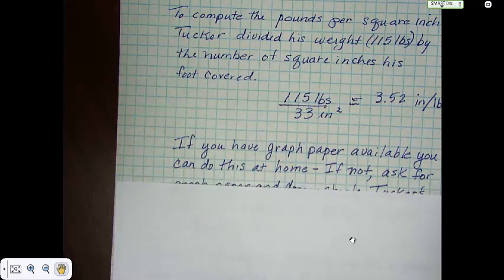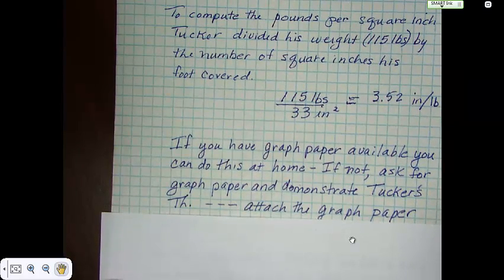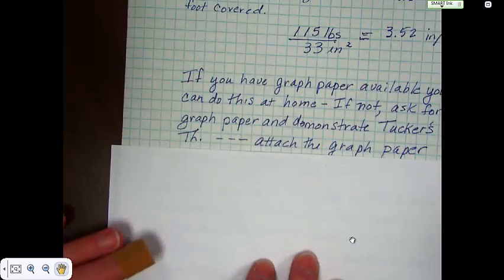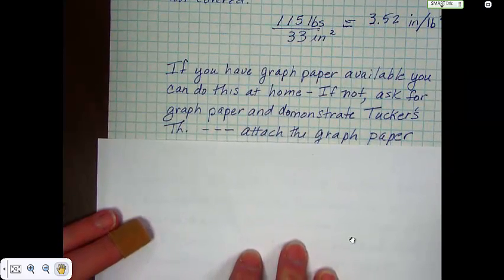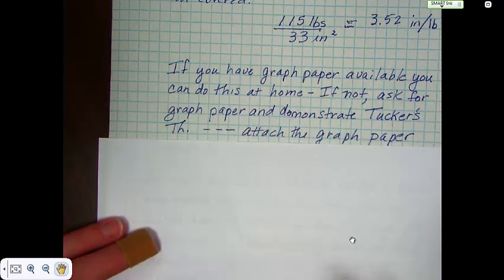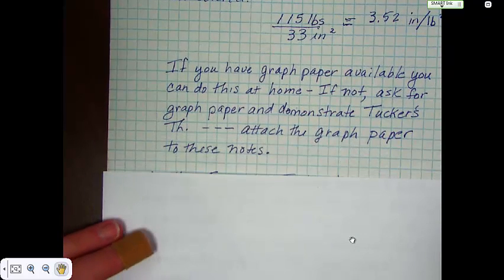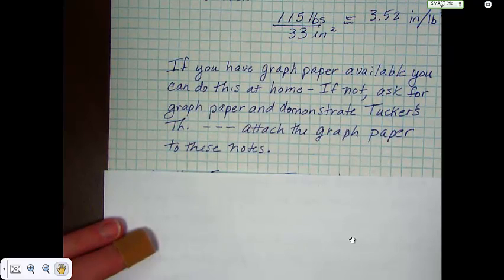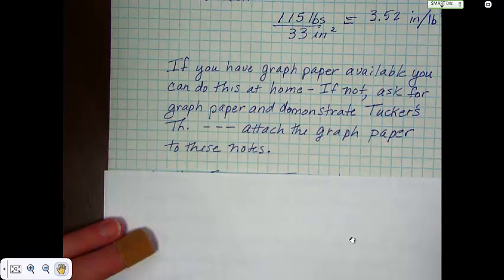Now if you have graph paper at home you can do this. If not, why don't you ask your teacher for some graph paper and demonstrate Tucker's Theorem and attach the graph paper to your notes. All you have to do is trace your foot, count the number of whole squares, then count the number of half squares. Remember, the half squares will have to be times two to make a whole square.